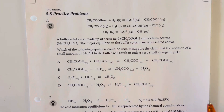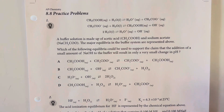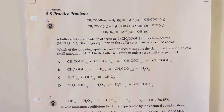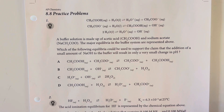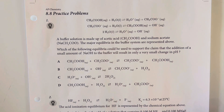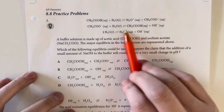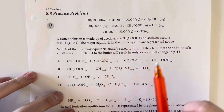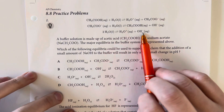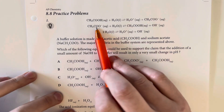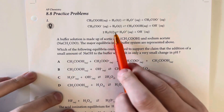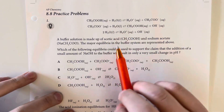8.8 practice problems. A buffer solution is made up of acetic acid and sodium acetate. The major equilibria of the buffer system is represented above. When we look at our net ionic equation, we're going to see that we are basically just going back and forth between the acetate and acetic acid portion.